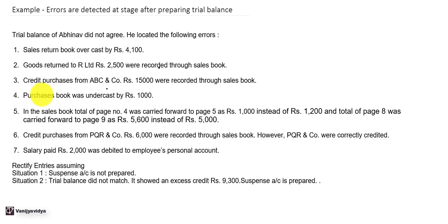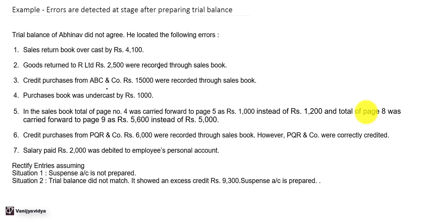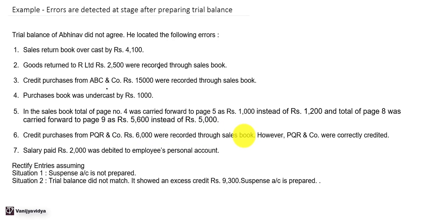Error 4: Purchases book was undercast by Rs. 1,000. Error 5: In the sales book, total of page 4 was carried forward to page 5 as Rs. 1,000 instead of Rs. 1,200, and total of page 8 was carried forward to page 9 as Rs. 5,600 instead of Rs. 5,000. Error 6: Credit purchases from PQR and Company Rs. 6,000 were recorded through the sales book.